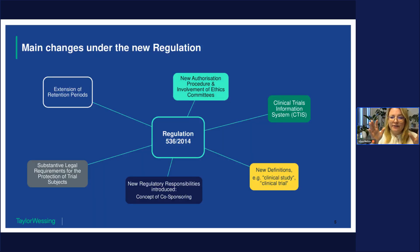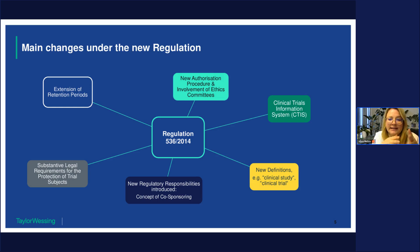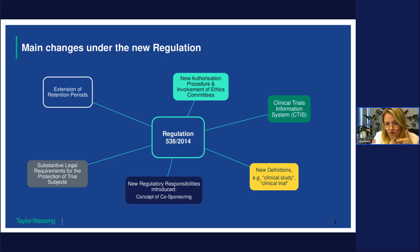What are the main changes under the CTR? First, we have a new approval procedure for clinical trials, which we will assess on the next slides. We also have a new database — the Clinical Trial Information System (CTIS) — through which sponsors must submit their application documents for approval via one central online platform, acting as a communication platform between the sponsor and the member states involved. Importantly, submission through CTIS is mandatory for both mono-national and multinational clinical trials.